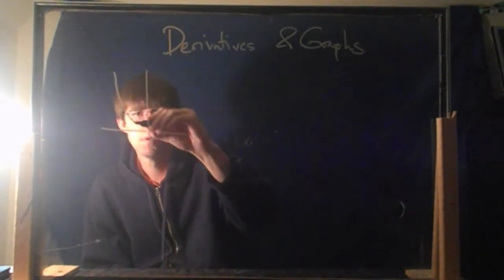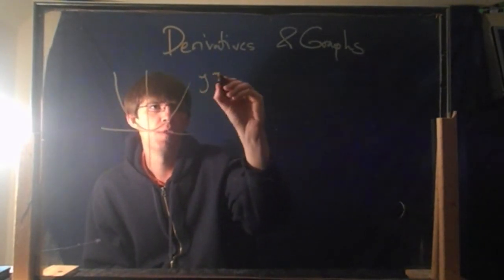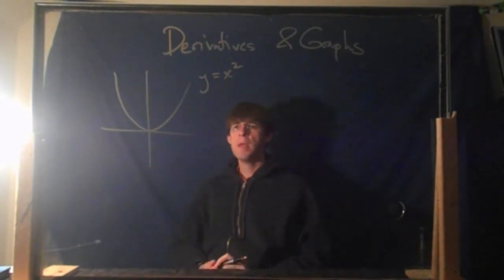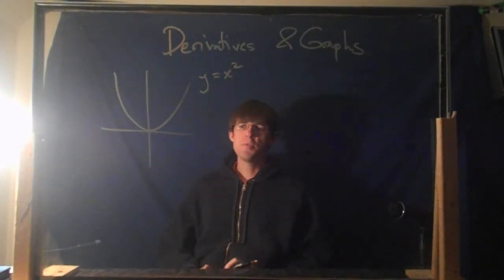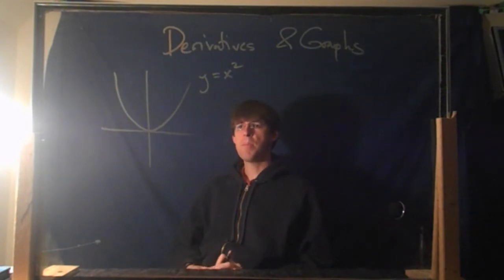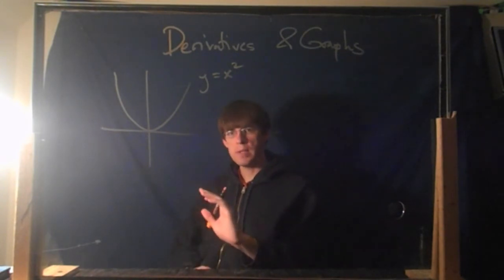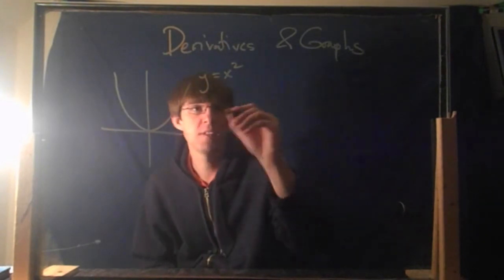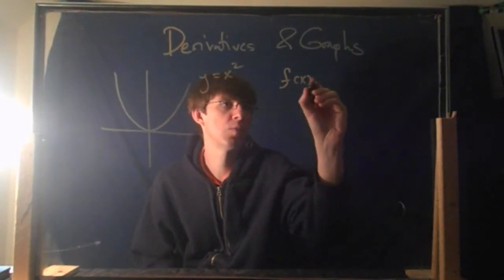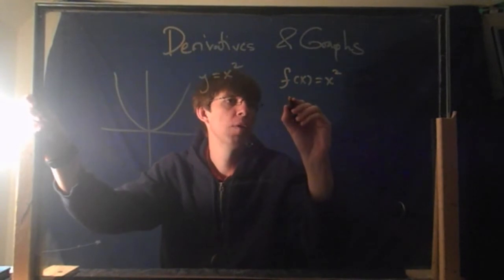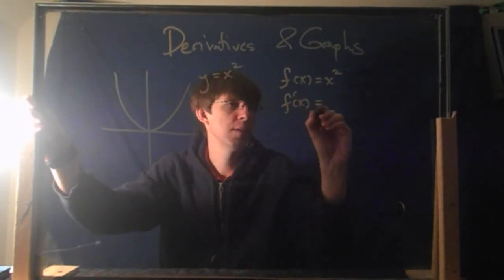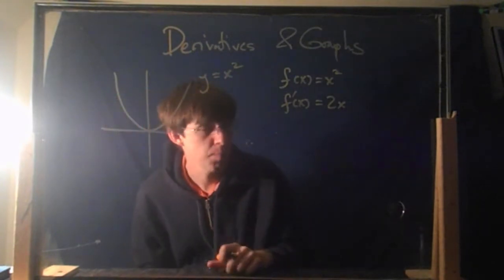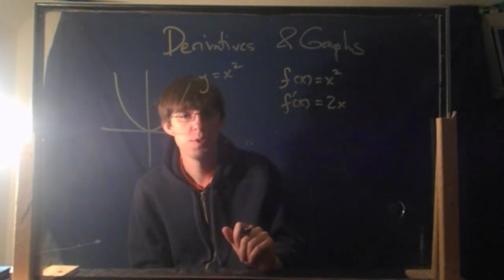How about the old y equals x squared, everybody's favorite example. Let's remember what the derivative is supposed to represent — the derivative at any point tells you the slope at that point. If f of x equals x squared, we already know from last time that f prime of x equals 2x. That was a lengthy computation, but that was the answer.